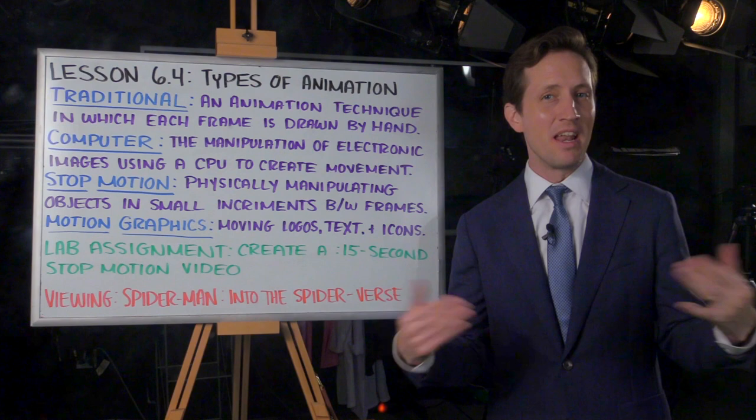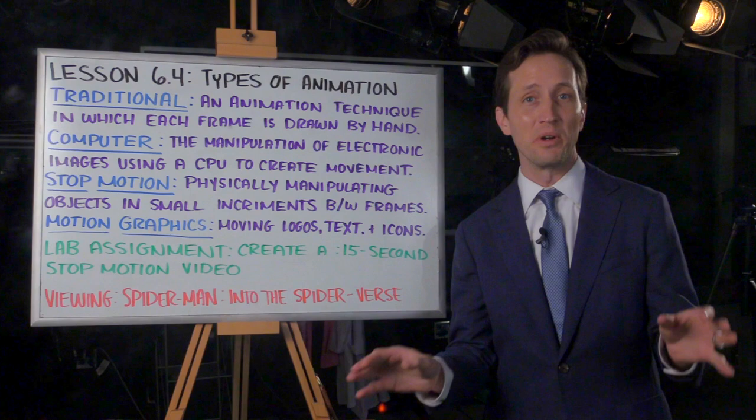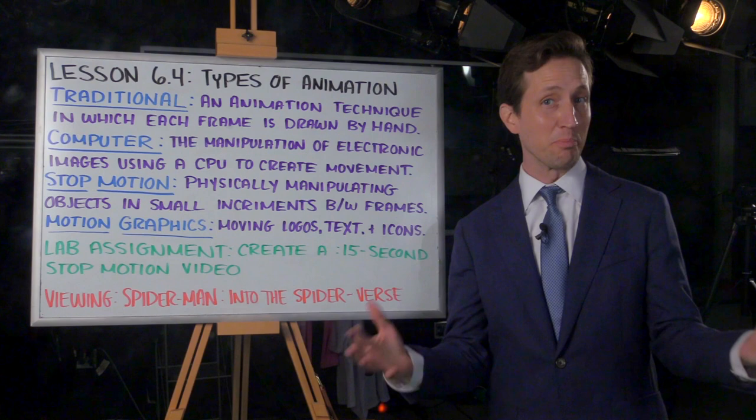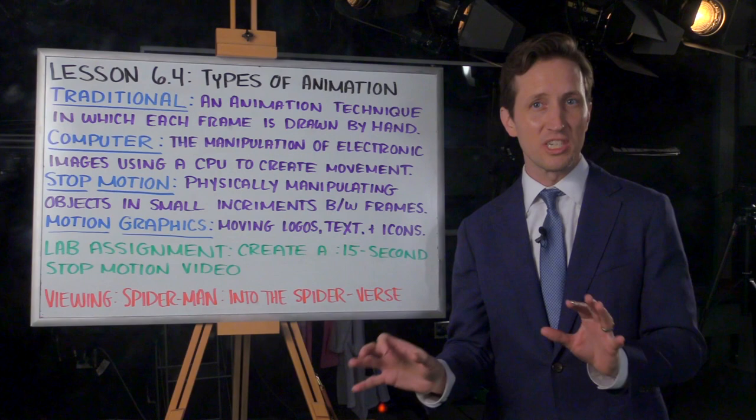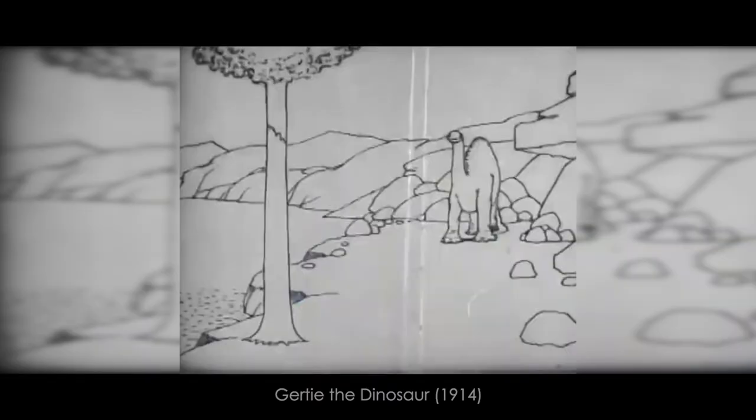Animation is the technique of photographing successive drawings or positions of puppets or models to create an illusion of movement when the photographs are shown as a sequence. We talked last week about the galloping horse experiment and how the persistence of vision fools our brains into thinking we're seeing movement when we're really just seeing a bunch of still images at a high frame rate, thereby creating the illusion of motion.